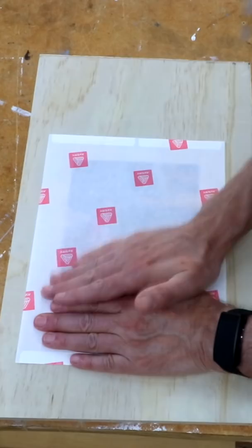Don't expect it to look like a perfect photograph. The wood grain will show through the image. After transferring apply a clear wood finish. I'm using spray lacquer here.